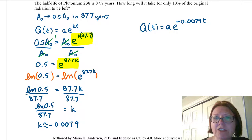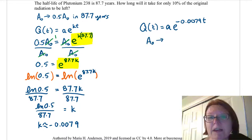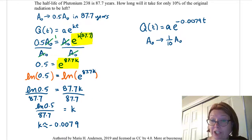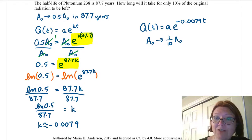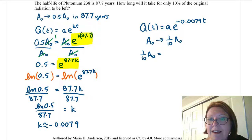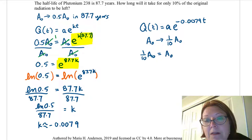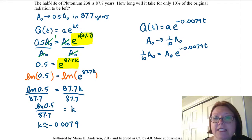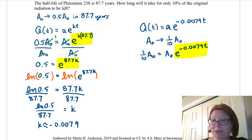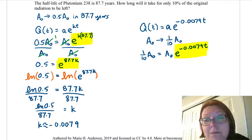So now we need to finally answer the question: how long will it take for only 10% of the original radiation to be left? If we start with capital A sub-zero, we want to have one-tenth of capital A sub-zero remaining, and the question is how much time that takes. Let's plug these things in. The final amount is one-tenth A sub-zero, replacing Q of t. The initial amount is capital A sub-zero. Then we have e to the negative 0.0079t. I need to isolate the exponential part to solve for t, so I'll divide both sides by A sub-zero.